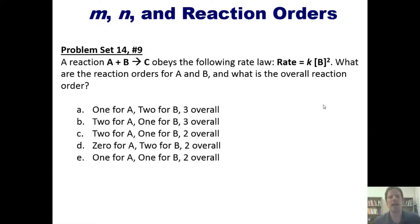How about this one? A reaction A plus B goes to C obeys the following rate law: Rate equals K times the concentration of B squared. What are the reaction orders for A and B and what is the overall reaction order? Once again I'm not going to answer this question for you but we'll let you think about it and see if you can come up with the answer yourself.